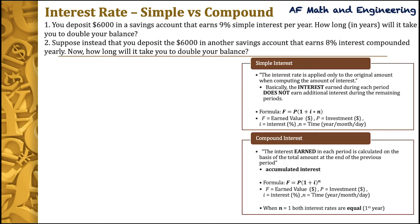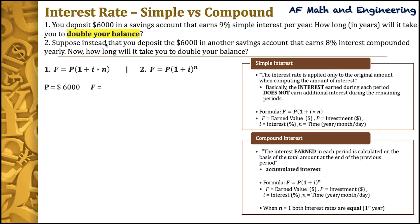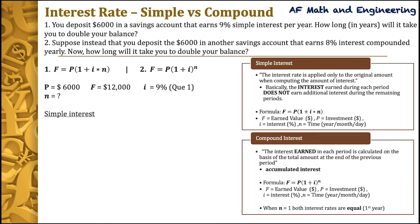In question one, we have a simple interest rate per year, so we apply the simple interest formula. Our deposit P is $6,000. The tricky part: what is our F? The question asks how long it will take to double your balance, so our new earned value F should be $12,000, which is $6,000 times 2. Our interest rate I in the first question is 9%. What we need to find is N.